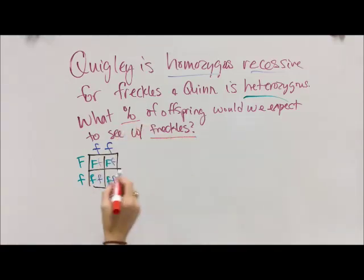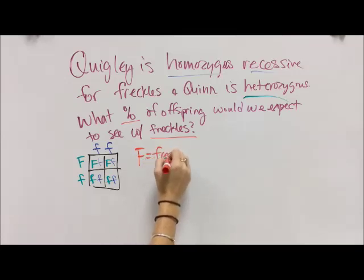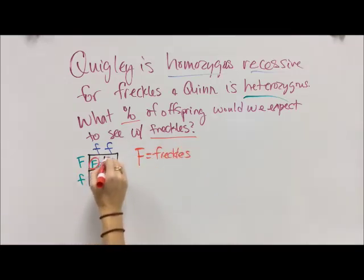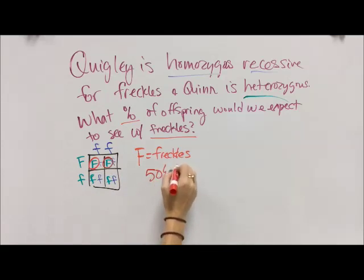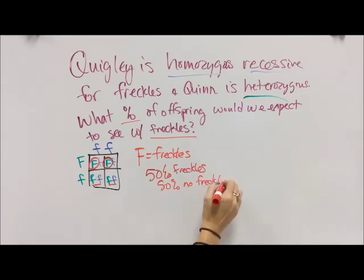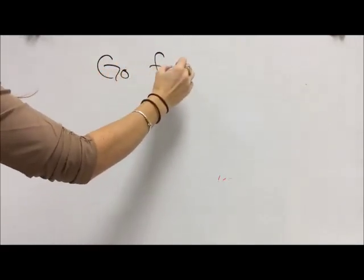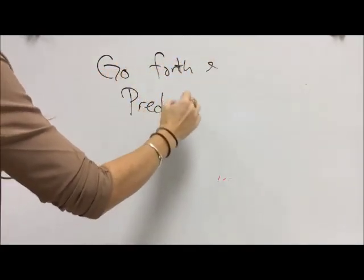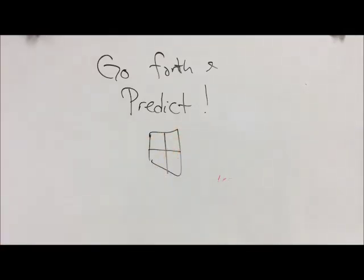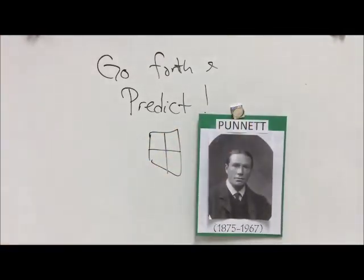We don't need to do all the genotypes and phenotypes here — we just want to know what percent has freckles. If big F equals freckles, how many boxes have big F? One, two — so that's 50 percent will have freckles, and two of the boxes do not. We'd expect 50 percent of their children to not have freckles. Now, they could have 10 kids and all 10 could have freckles, because every single time they have a child the probability is 50-50. We're just looking at probability of inheritance.